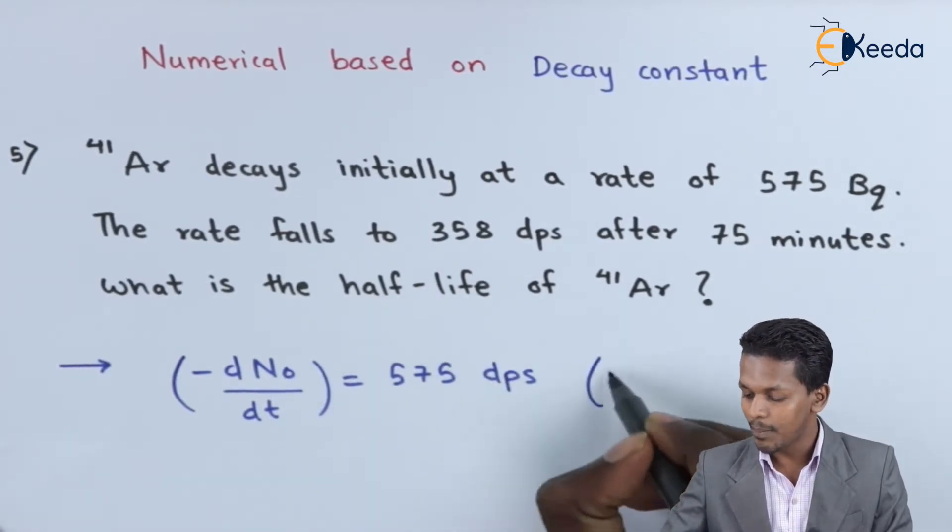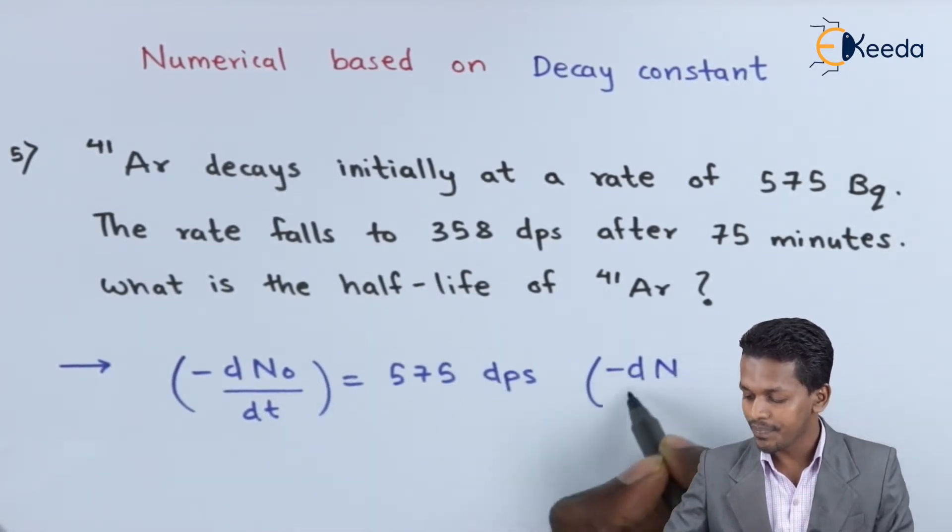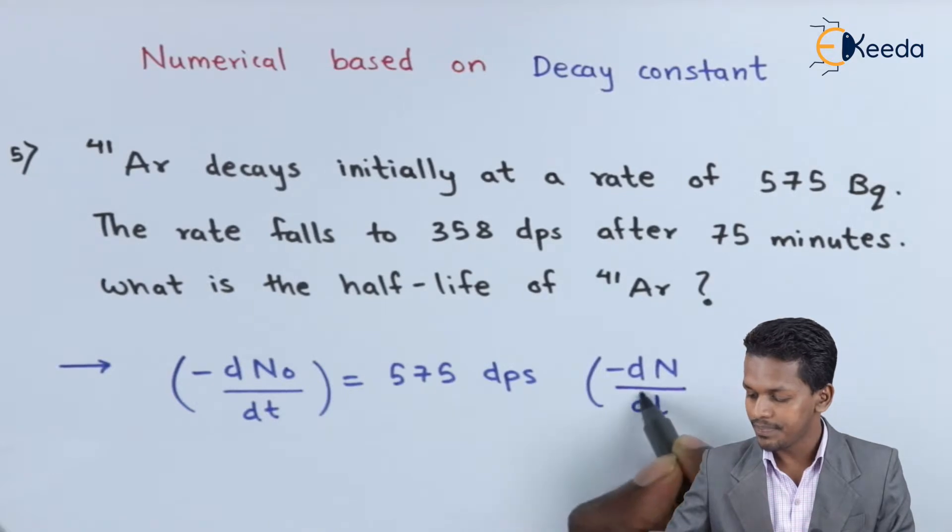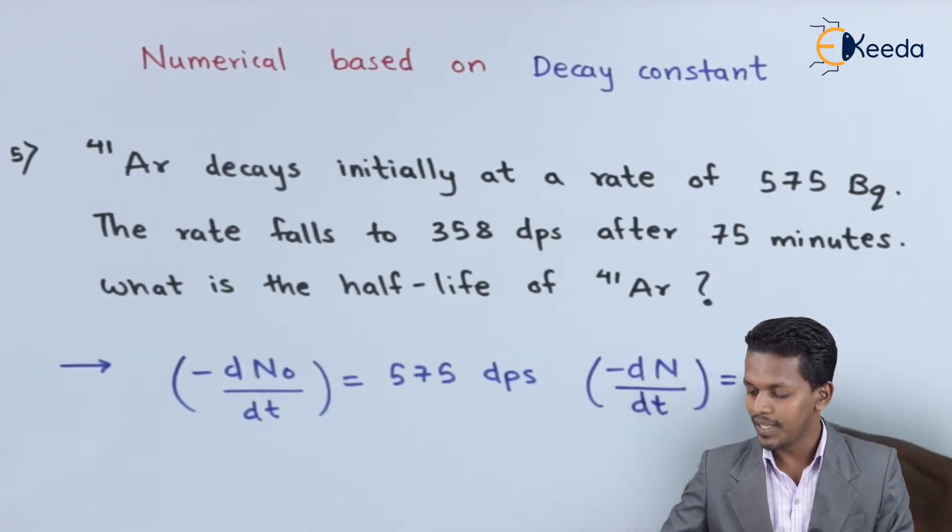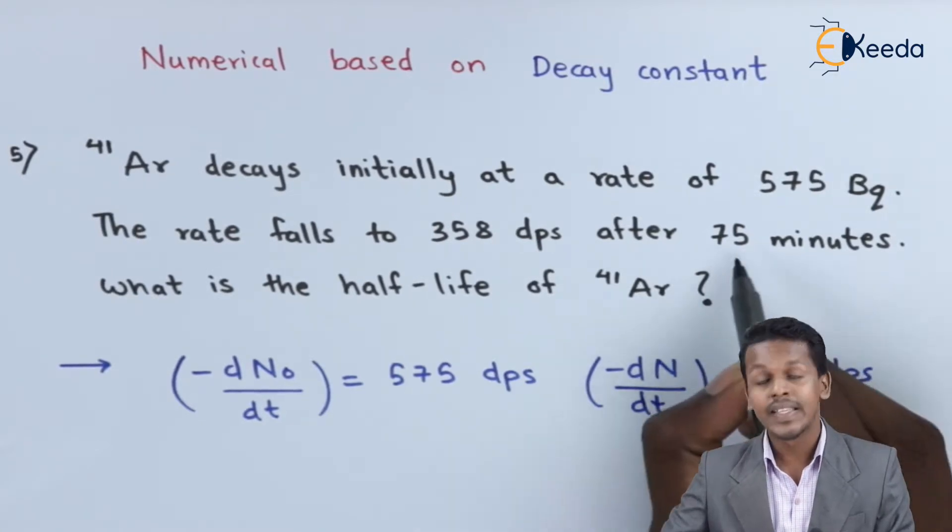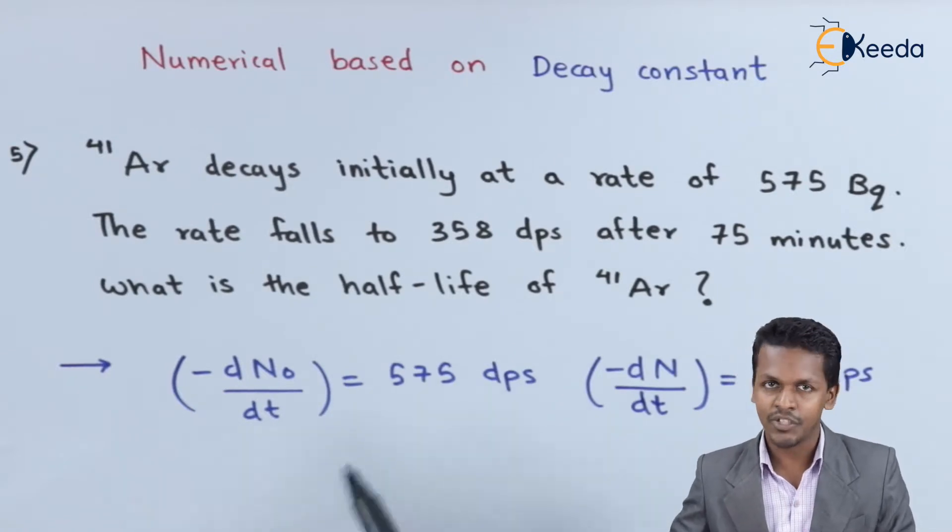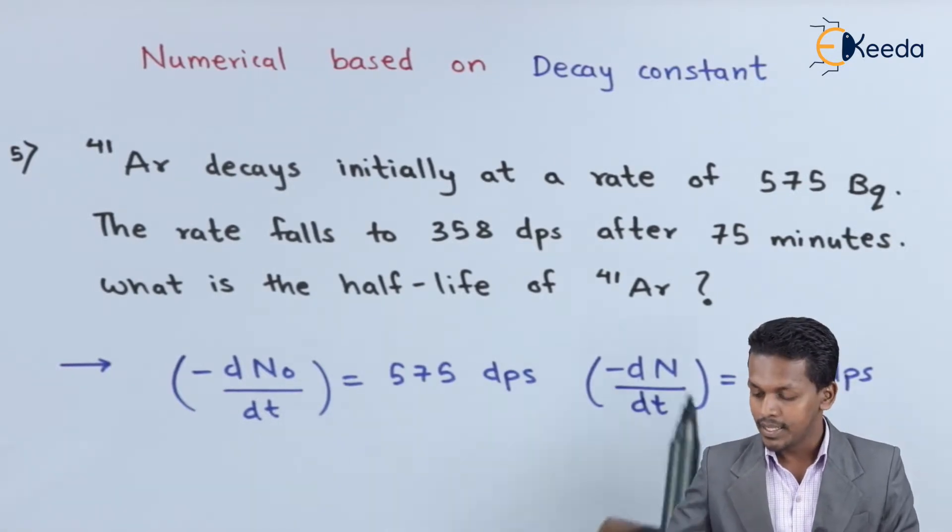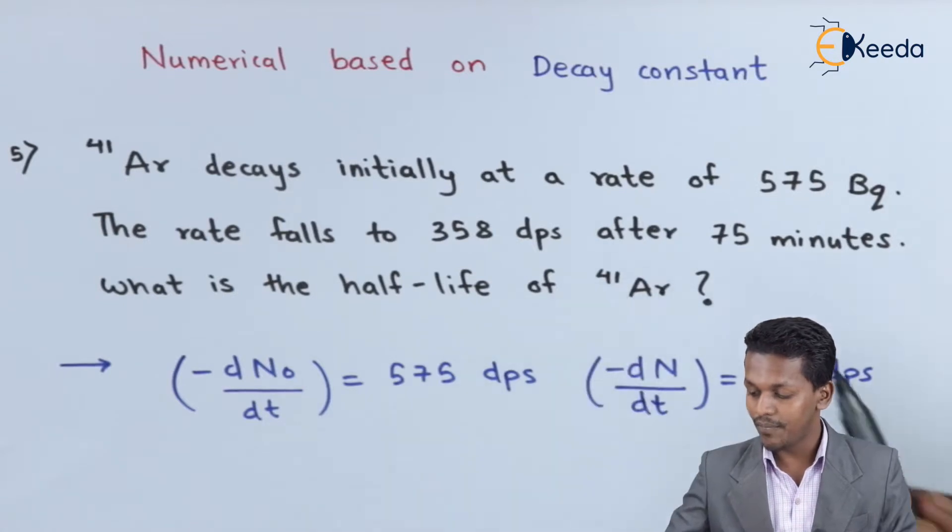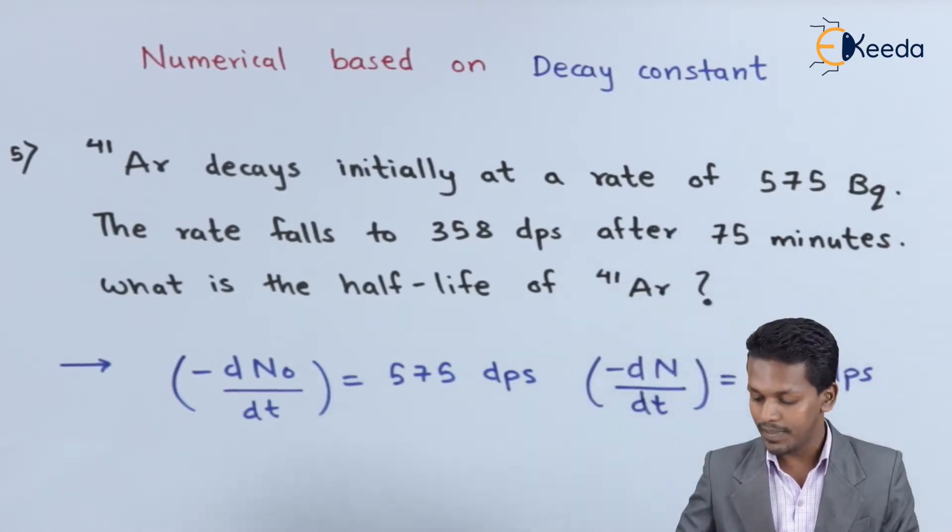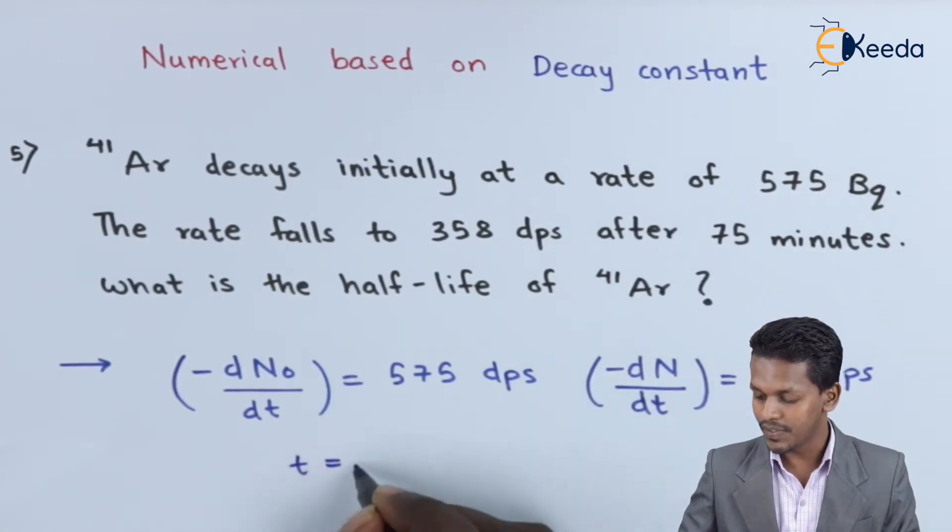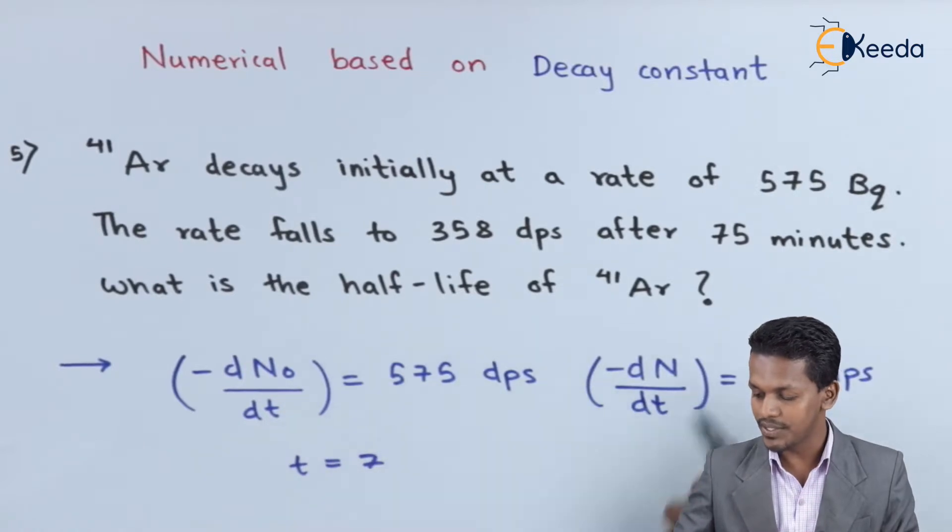Therefore we could write this as -dN/dt, which is found to be 358 dps. This is the disintegration after time 75 minutes, and the previous value is the disintegration at initial time when t equals 0. We also have a time value - with a duration of 75 minutes we can find these two changes.